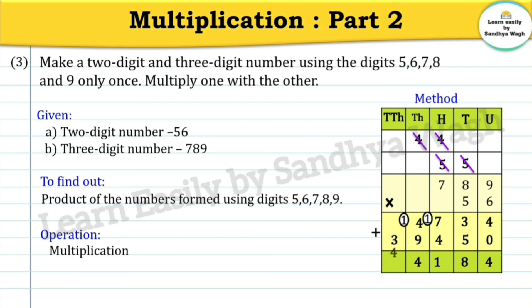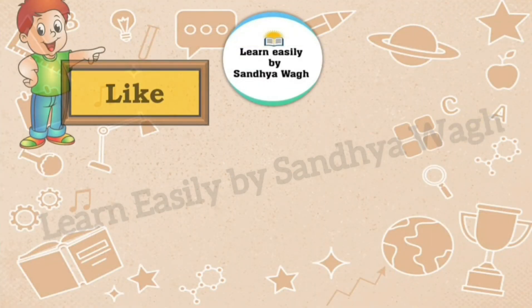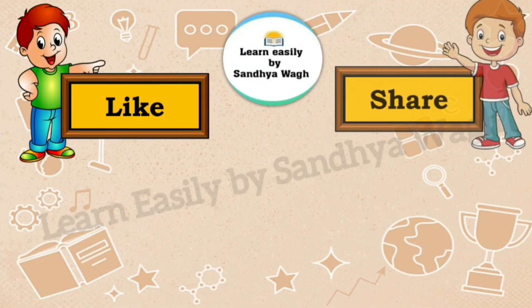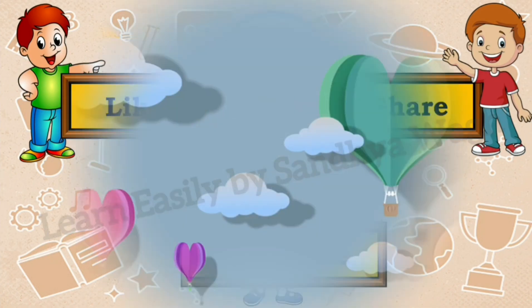Our final answer is the product of the numbers formed using digits 5, 6, 7, 8, and 9 is 44,184. That's all for today; we will meet again in our next video. Till then, keep learning, keep enjoying — bye bye!